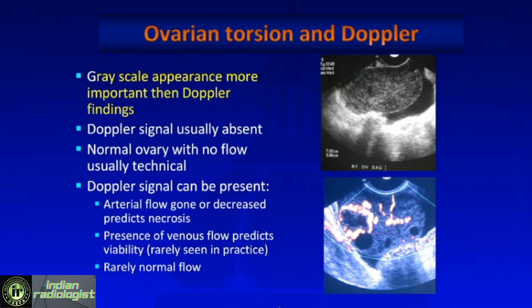The flip side is: the grayscale in ovarian torsion is really the most important finding, provided the patient has the appropriate symptoms of pain, nausea, sometimes vomiting. But if you see a normal ovary with no flow, that's usually technical. Because in ovarian torsion, if you think about the mechanism, you have twisting of the pedicle — first obstruction of venous outflow, so the ovary enlarges and becomes edematous. And ultimately, if there is enough twisting, you have absence of ovarian inflow and necrosis as well. So you have a combination of edema, hemorrhage, and necrosis, and therefore the ovary is usually enlarged and abnormal in echotexture.